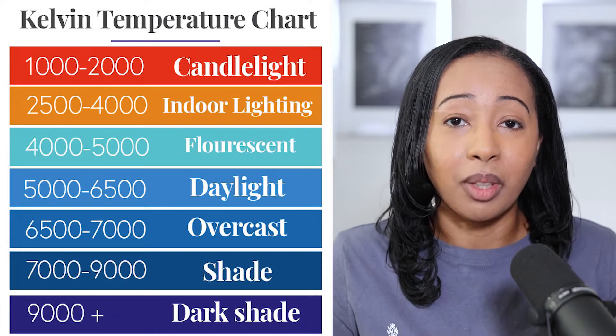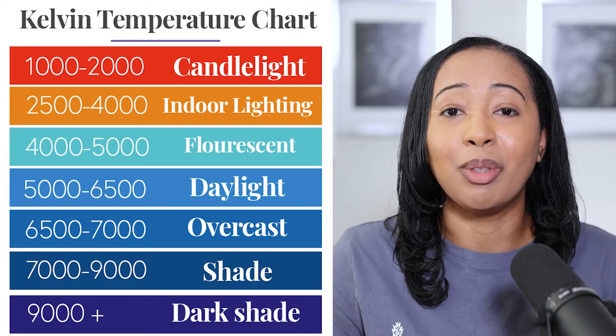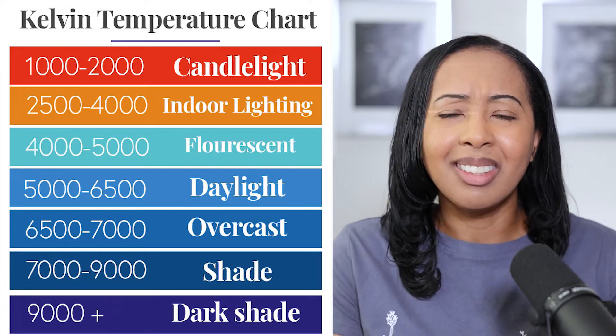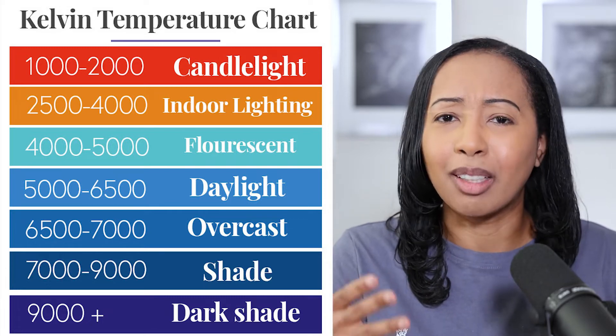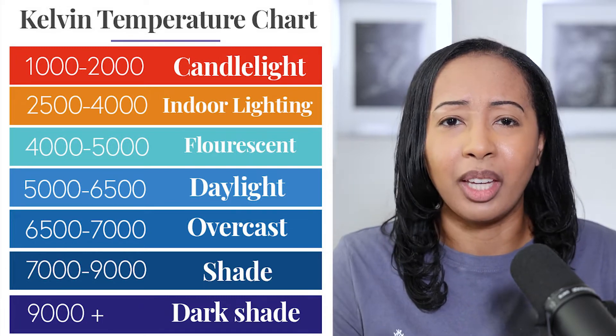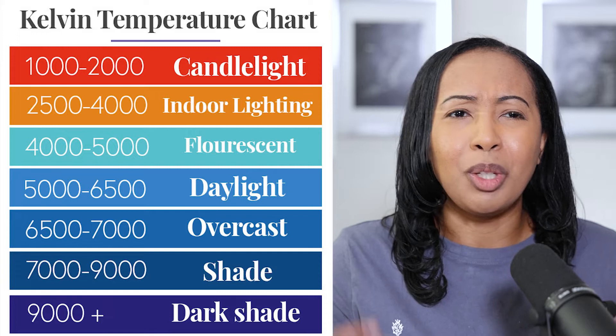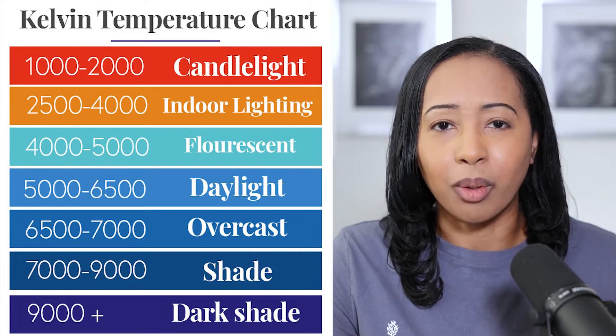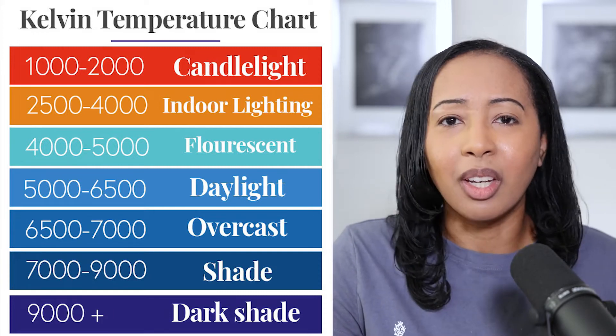Now here is where it can get a little tricky. The idea with Kelvin white balance is you want to make your setting match the color temperature of the main light source of your scene. For example, sunlight is a relatively blue light when it comes to how your camera interprets it. And this is actually something that confused me a lot when I was starting out, because when you picture the sun, you think of like an orange or yellow sun.